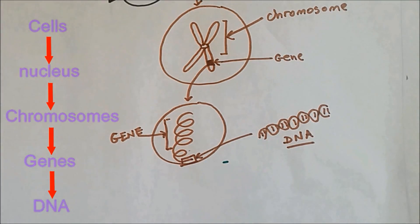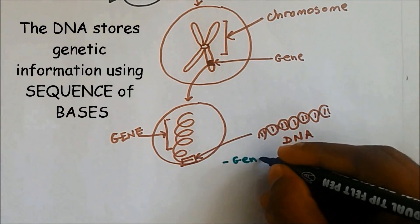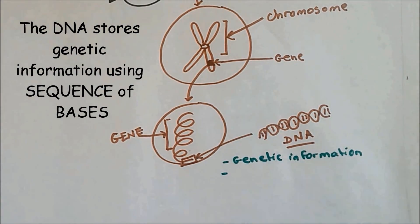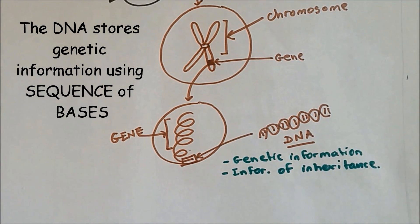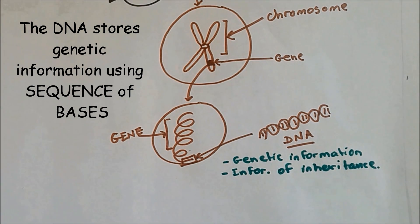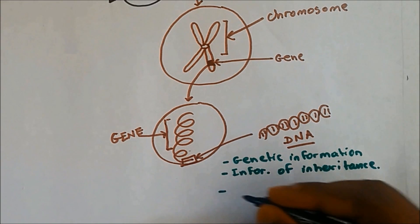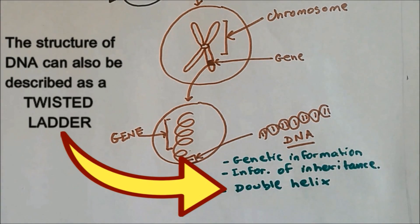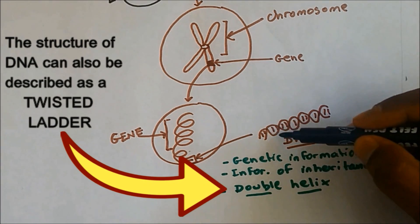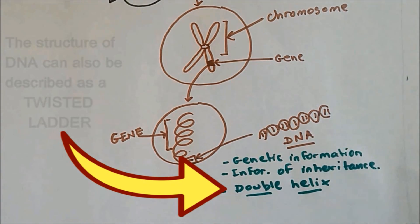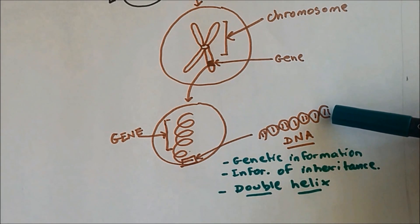DNA contains genetic information, or it can be called information of inheritance, which means it contains information of your parents, your grandparents and so on. The structure of DNA is known as a double helix. It is called 'double' because it has two strands, and 'helix' because it goes in a spiral shape. The double strands are held together by weak bonds.